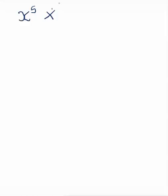So now we'll be looking at the second index law, which involves dividing variables and numbers, and to see what happens with the indices or the powers when we divide. We'll look at index law 1 just quickly to recap: if we have x to the power of 5 times x to the power of 3, the first index law involved multiplication. We learnt that when we multiply and we have the same base — x and x — the base remains in our answer. The only thing changing are our powers, and with this law we add the powers.